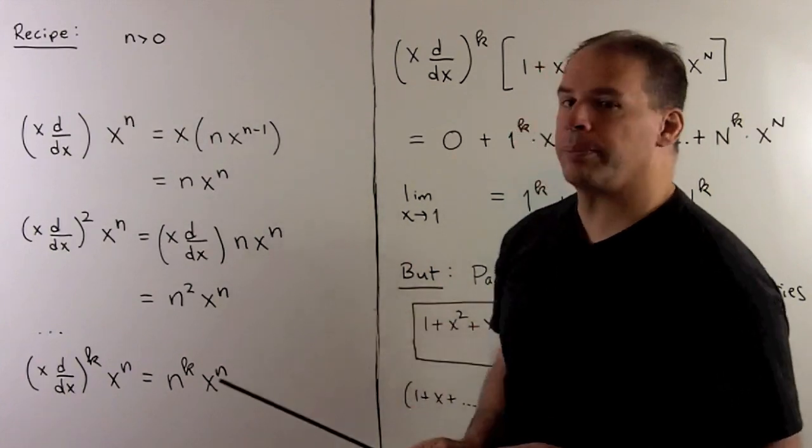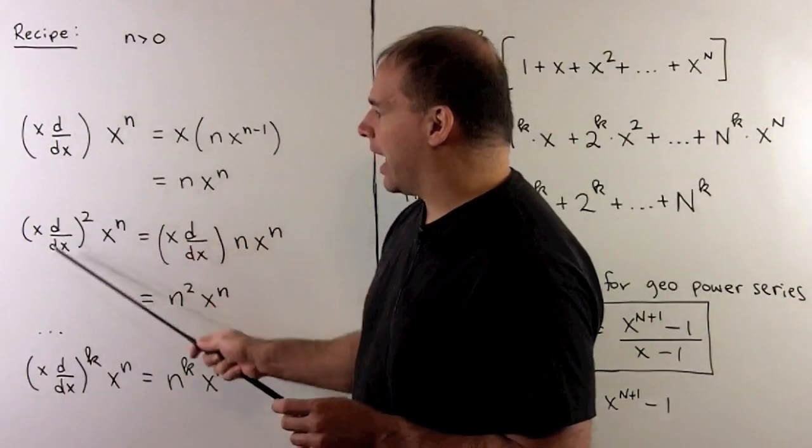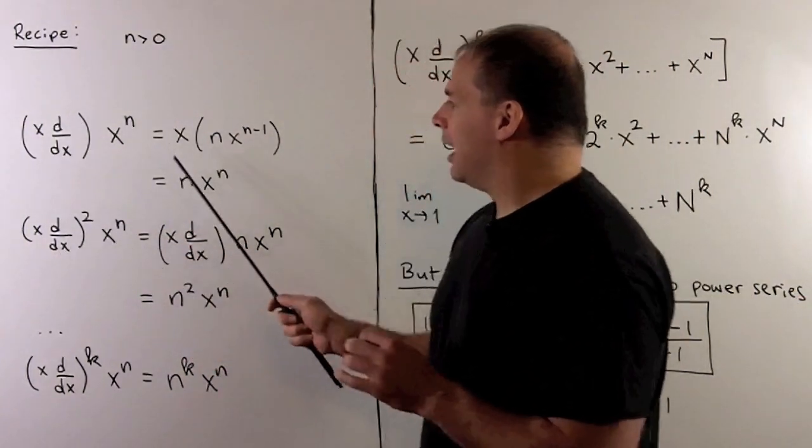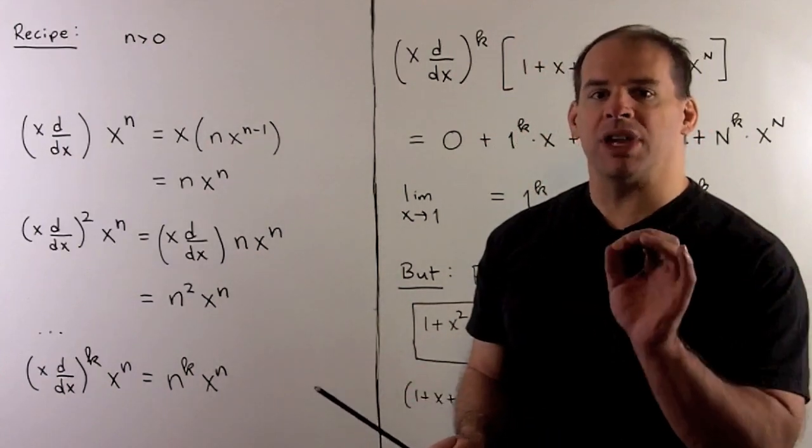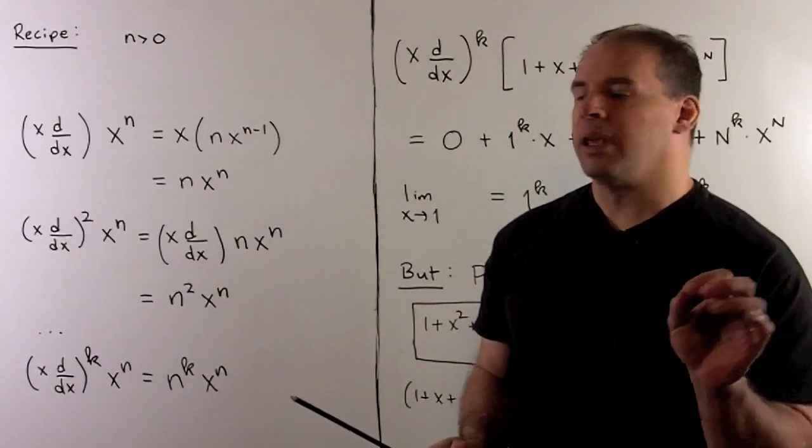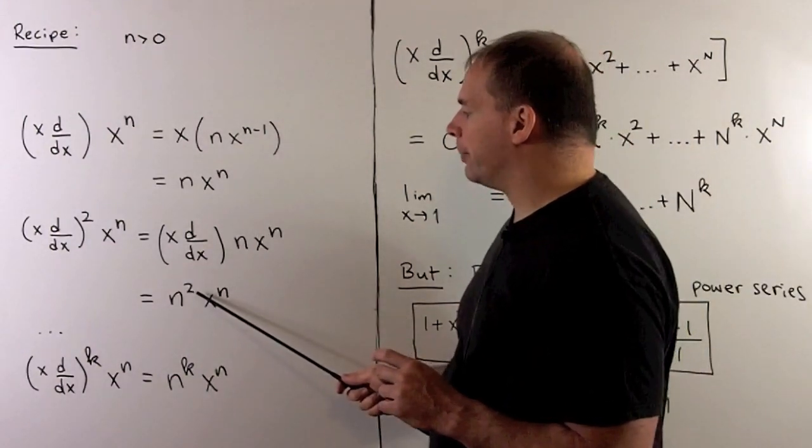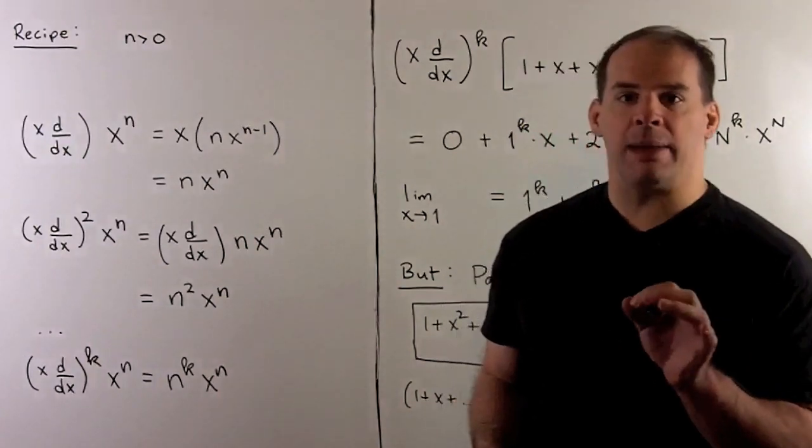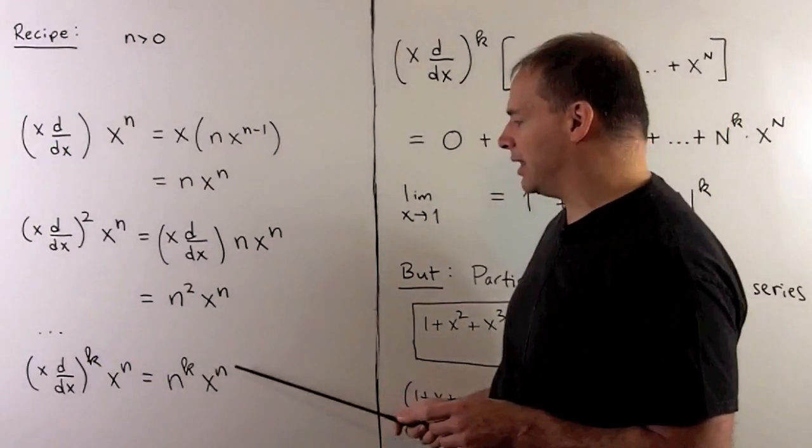Now if we apply this operator again, well, we're going to get nx^n from the first time we applied it. We apply it another time. We could pull the n out, then we're just going to get back another nx^n, so we get n^2. If I do this k times, we're just going to have n to the kth power out in front of our x^n.